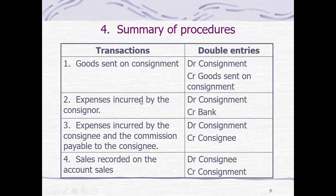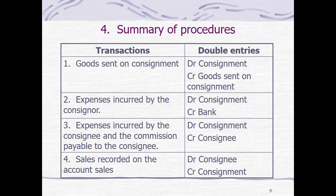In terms of recording transactions: when goods are sent on consignment, the debit is inventory on consignment and credit is merchandise inventory, or shipments on consignment if using the periodic inventory system. If we credit merchandise inventory, that is clearly the perpetual inventory system, which we use if the problem is silent. For expenses incurred by the consignor in relation to the consignment contract, we debit inventory on consignment and credit cash in bank if paid in cash, or credit a liability account such as accounts payable if on accrual.